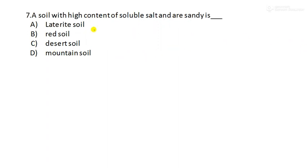Next, moving to question number 7. A soil with high content of soluble salt and sandy. These two properties belongs to which soil? It is mainly desert soil. They are sandy. They are called as sand. So this desert soil, they have high content of soluble salt and they are also sandy. Option number C is the right answer.